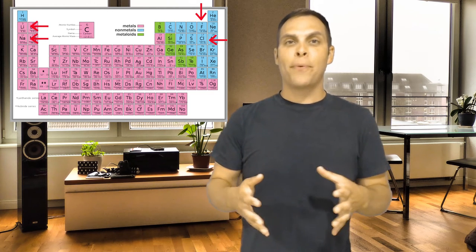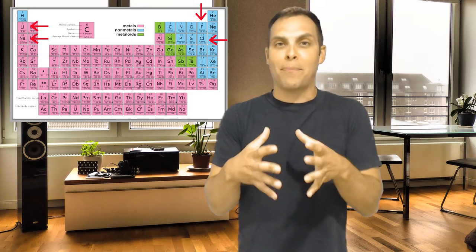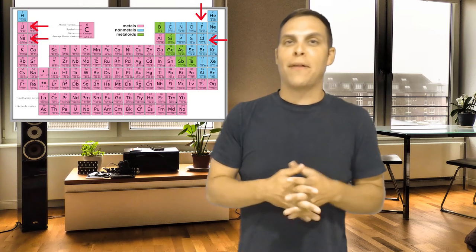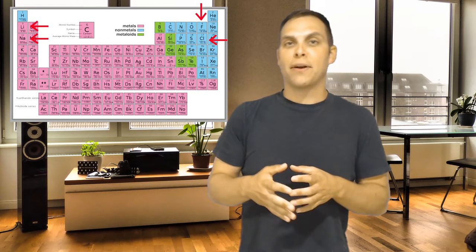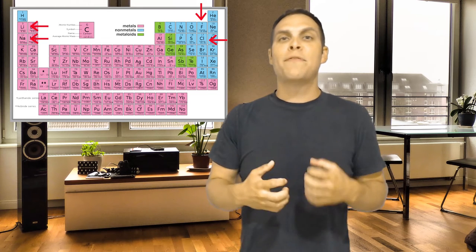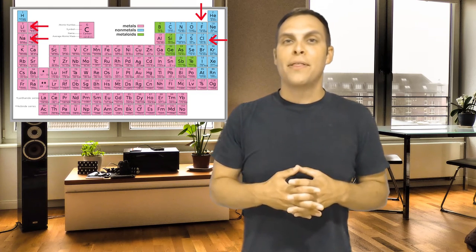And then in other places, particularly in the middle of the periodic table, you will see that there are atoms that kind of have moderate electronegativity. Sometimes they're taking electrons away. Sometimes they're giving electrons away. But more often than not, they're just sharing things like carbon.